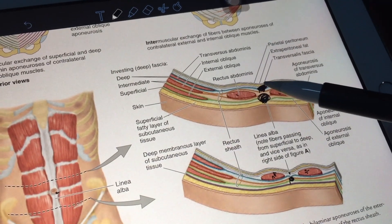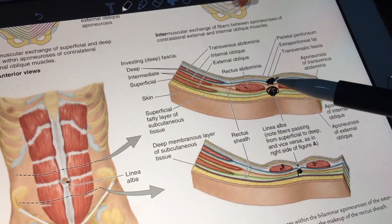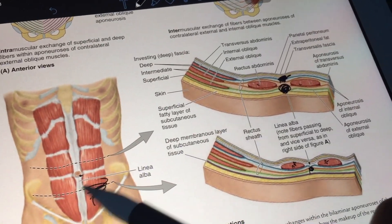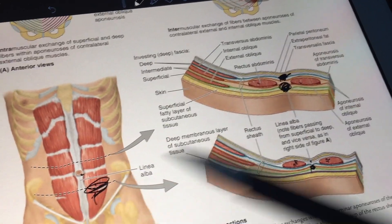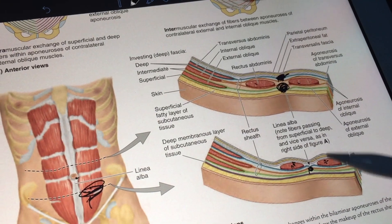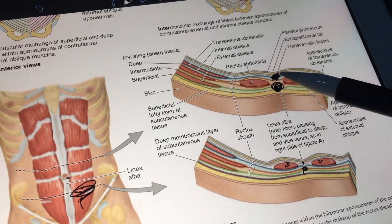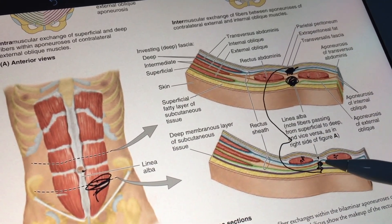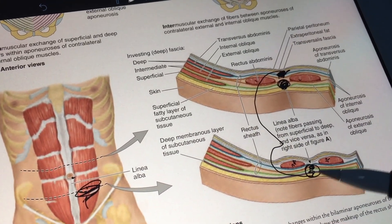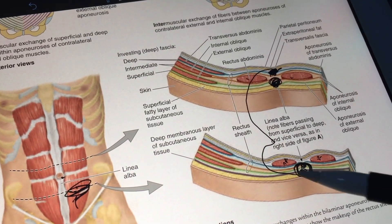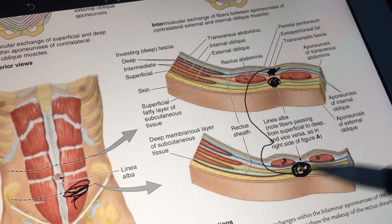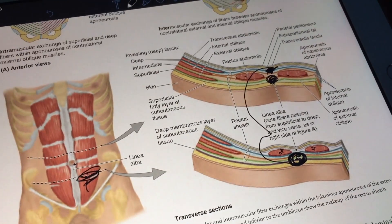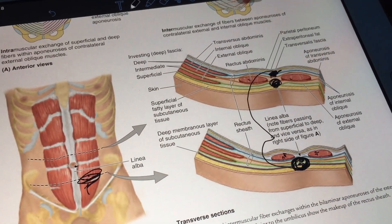If you go below the umbilicus, the layer from behind shifts to the front. So there is a thicker layer in front, and that's the reason why your lower abs don't show as easily.